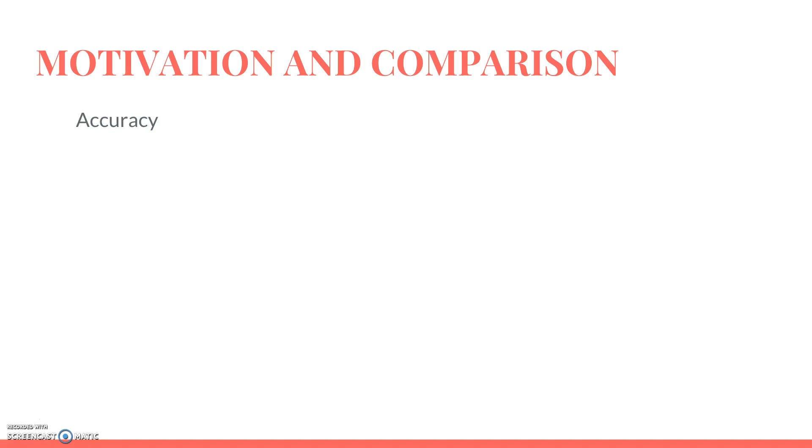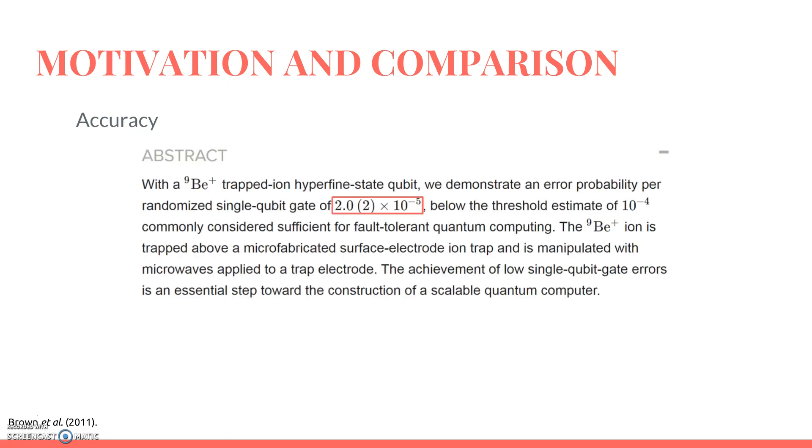A second motivation to study trapped ion quantum computing technology is that quantum operations can be performed with especially high accuracy. For example, in 2011, Brown et al. reported coherent manipulation of trapped ion hyperfine state qubits, with an average error probability of 10 to the minus 5, which is an order of magnitude below the commonly considered threshold for fault-tolerant quantum computing, and much more precise than many other leading quantum technologies.